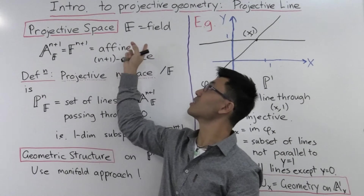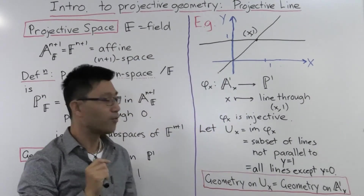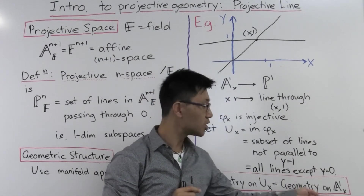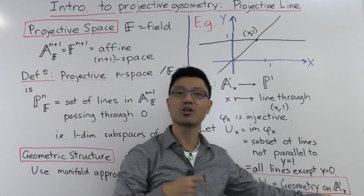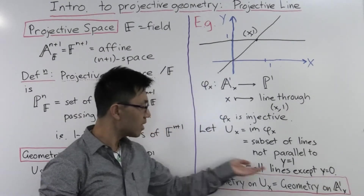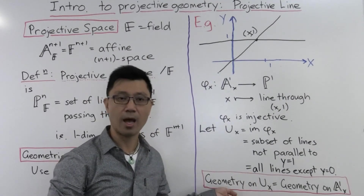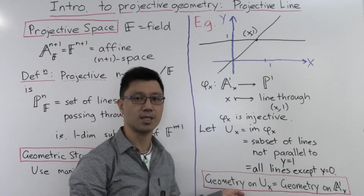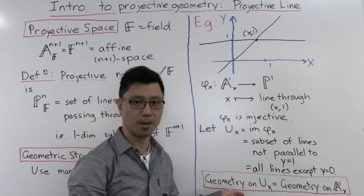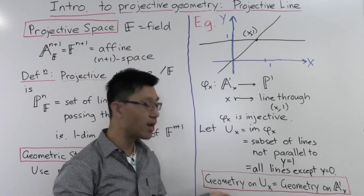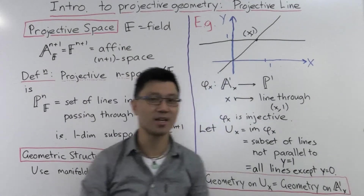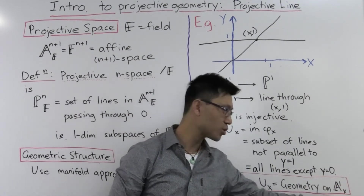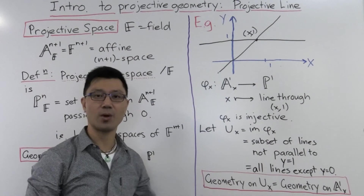What happens if the field F is the complex numbers? Well, firstly it's algebraically closed, so you can think of this as an algebraic variety, but you can also think of A^1_C as a complex manifold, so in that case this has the structure of a complex manifold. It's up to you to decide whether you want to view it as a complex manifold or as a variety, as the case may be. Finally, what happens if F is arbitrary? At the very least, this is a scheme, so you can think of the geometry on U_x as a scheme.